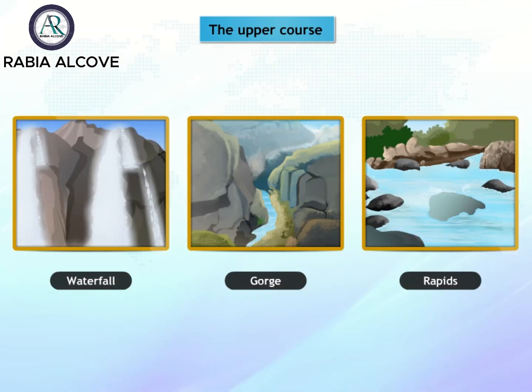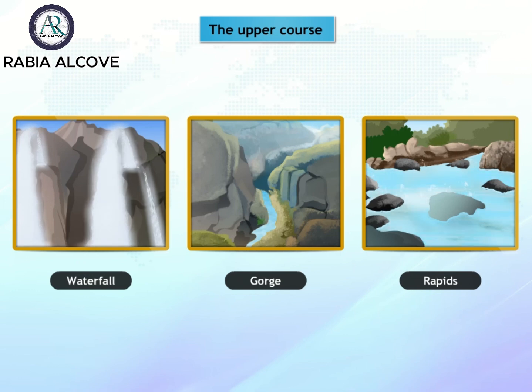The upper course of a river has rapids, waterfalls, and gorges. A gorge or a canyon is a very deep valley that has been cut by a river.